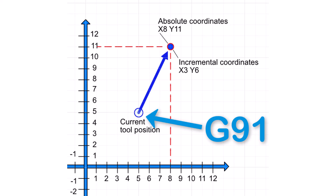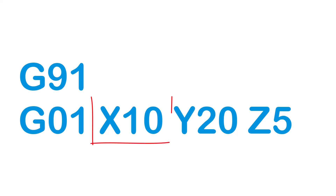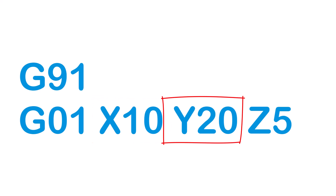In G91 mode, all coordinates are interpreted as distances from the current position of the tool. For instance, with the line of G-code here, if we're in G91 mode, the machine will move the tool 10 units along the X-axis, 20 units along the Y-axis, and 5 units along the Z-axis, all from its current location.